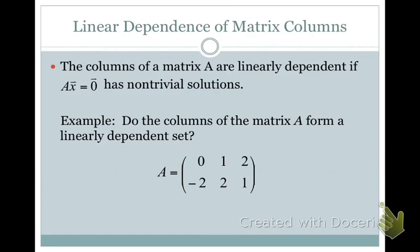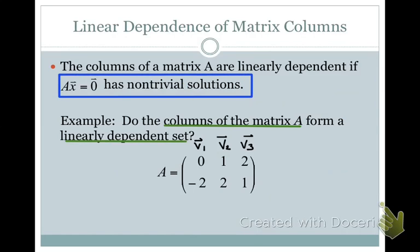Now let's look at another way to examine linear dependence. Representing the same vectors v1, v2, and v3 as columns of a matrix, we can ask whether the columns form a linearly dependent set. All we need to show is that Ax = 0 has non-trivial solutions. The matrix equation Ax = 0 is equivalent to the vector equation x1·v1 + x2·v2 + x3·v3 = 0 — these statements are equivalent.